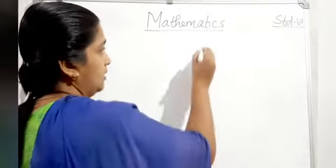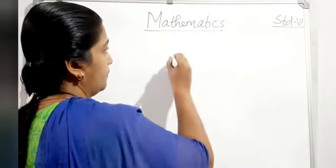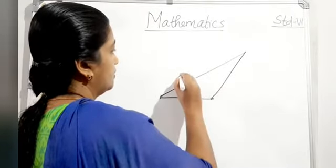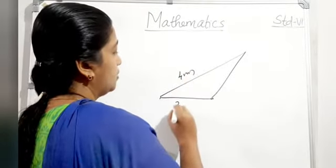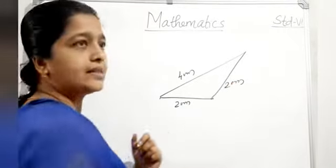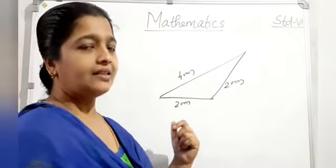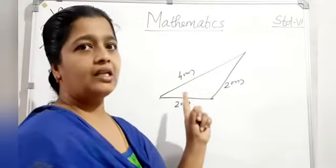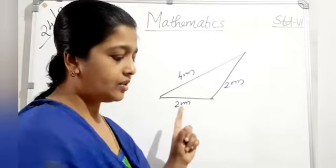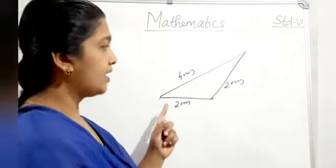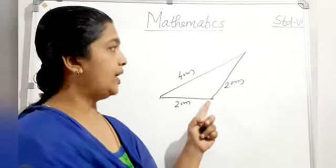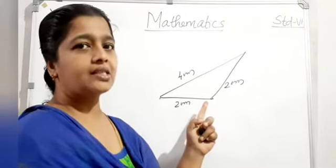Next, an obtuse angled triangle. For example, with sides 4 cm, 2 cm, and 2 cm: two sides are equal, so it is an isosceles triangle. One angle is obtuse, so it is an obtuse angled isosceles triangle.